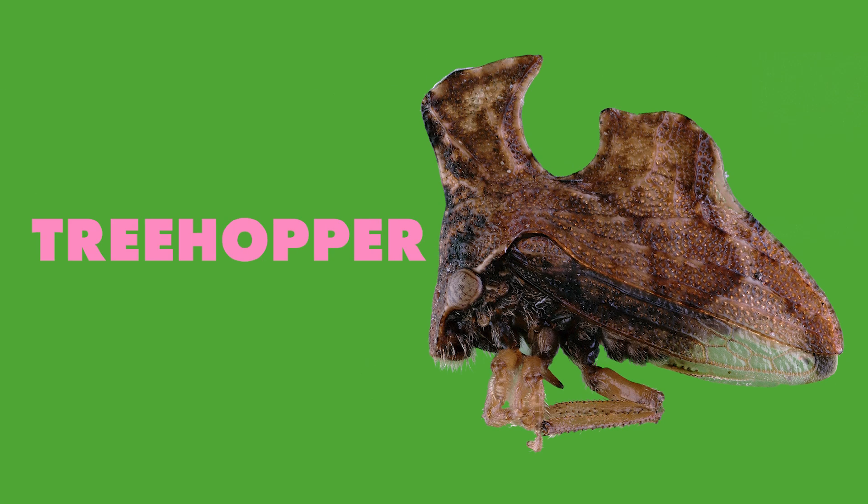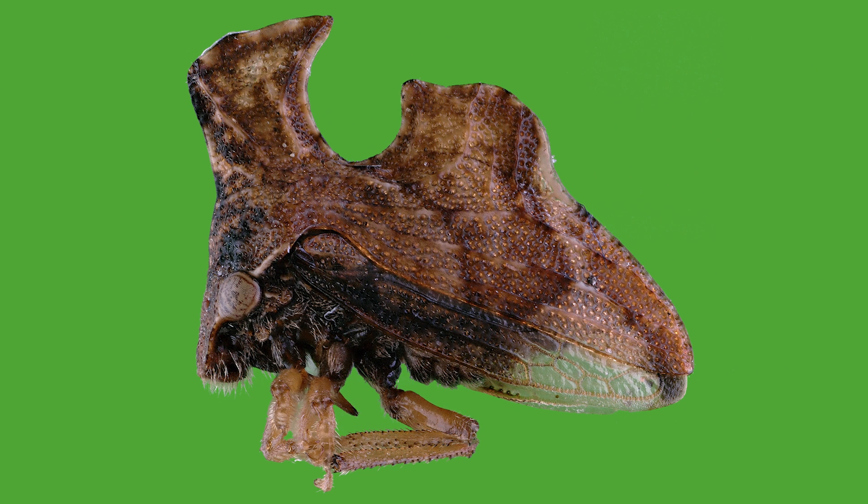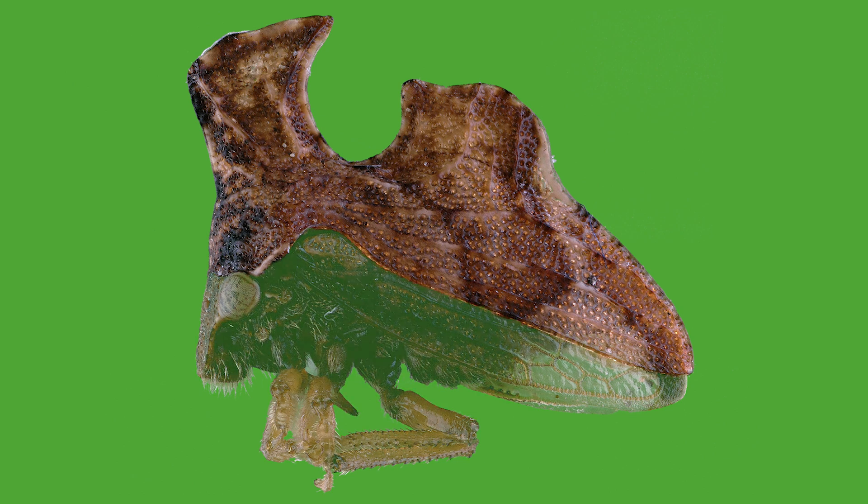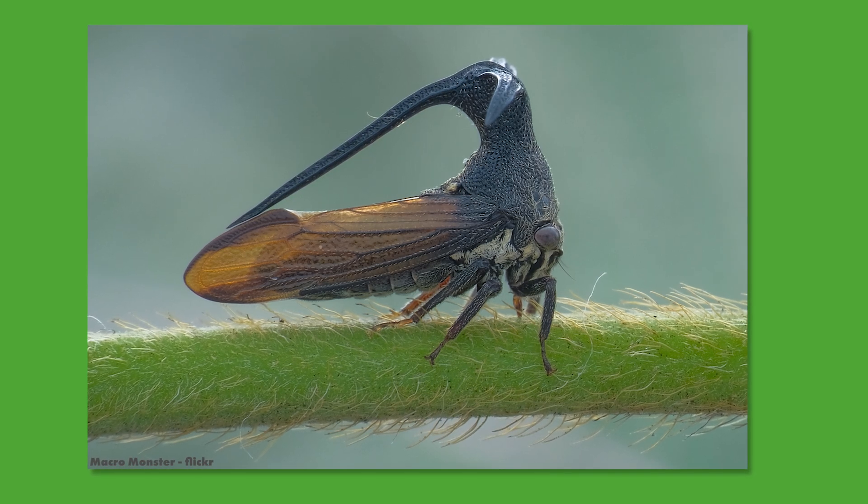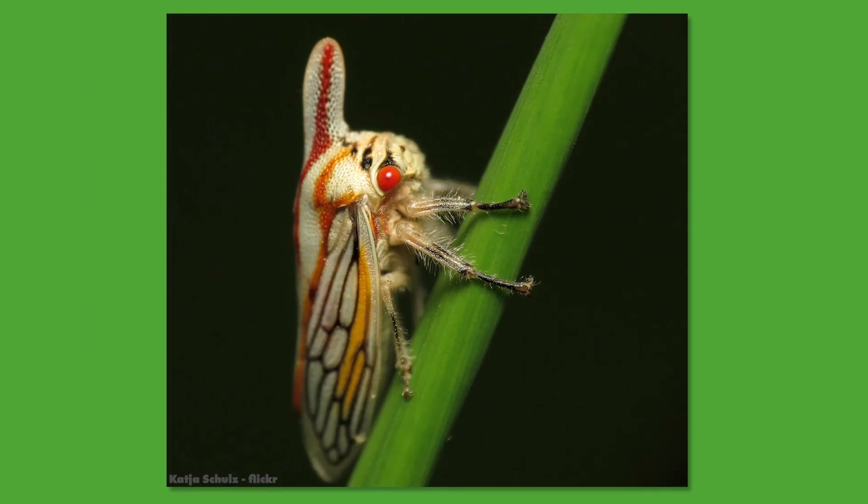Treehoppers, a different family of Hemipterans, are some of the coolest looking insects on Earth. They're famous for their incredible helmets, which are outgrowths of the prothoracic segments directly behind their heads. In some species, they form huge spikes, earning them their other common name of thorn bugs.